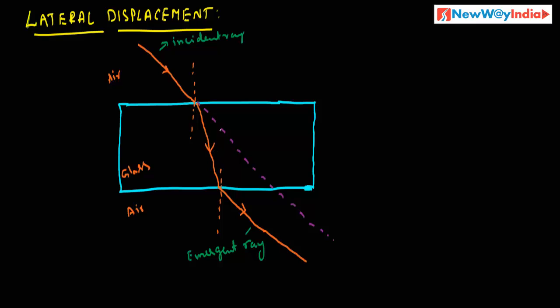The distance between the extension of the incident ray and the emergent ray is called lateral shift. This distance is represented by PQ. The perpendicular distance between the path of the incident ray and the emerging ray from the optical slab is called lateral displacement.